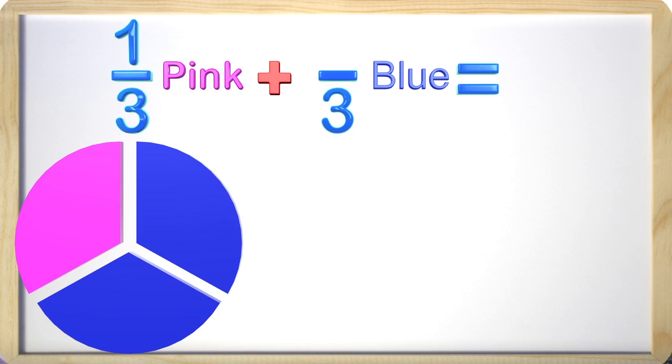Now to get the numerator, we need to count how many blue parts there are. There are two blue parts of the circle, so we can now say that two-thirds of the circle is blue. Great job.